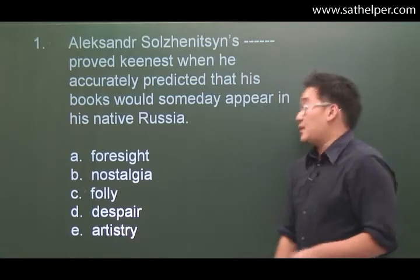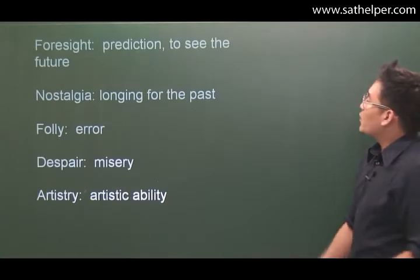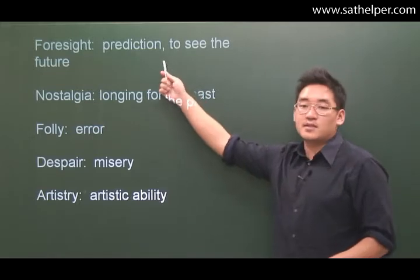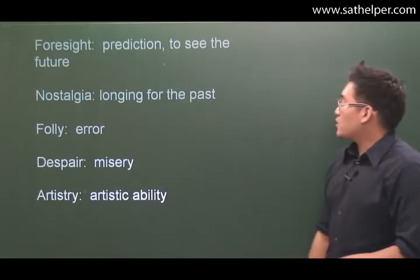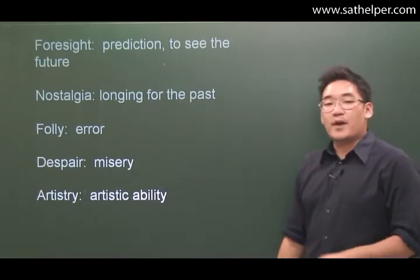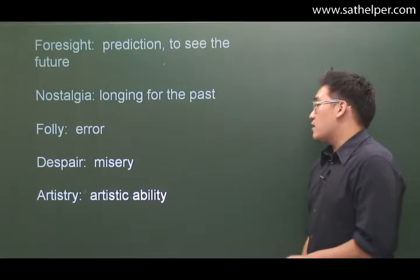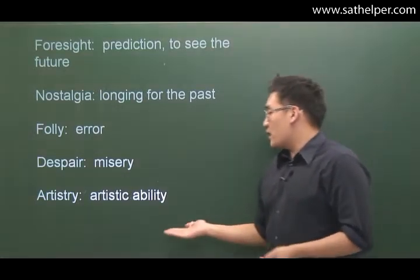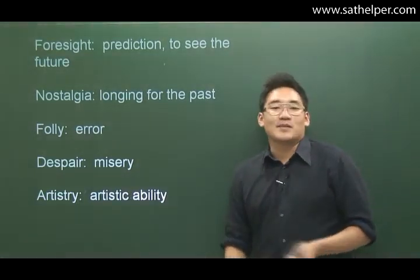Let's look at what these words mean. Foresight means prediction — to see into the future. Nostalgia means longing for the past. Folly means error. Despair means misery. And artistry means just artistic ability.